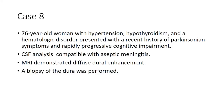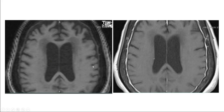Case 8 is a 76-year-old woman with hypertension, hypothyroidism, and a hematologic disorder, presenting with recent Parkinsonian symptoms and rapidly progressive cognitive impairment. CSF analysis was compatible with aseptic meningitis — no organisms cultured, only inflammatory cells. MRI demonstrated diffuse dural enhancement and a biopsy was performed. Comparing pre- and post-contrast MRI, the enhancement is fairly dramatic, and the differential diagnosis was wide.